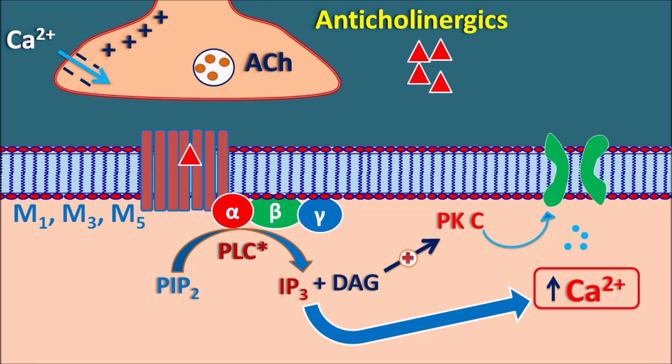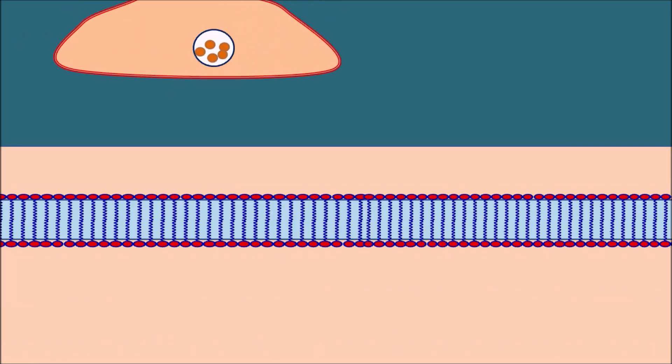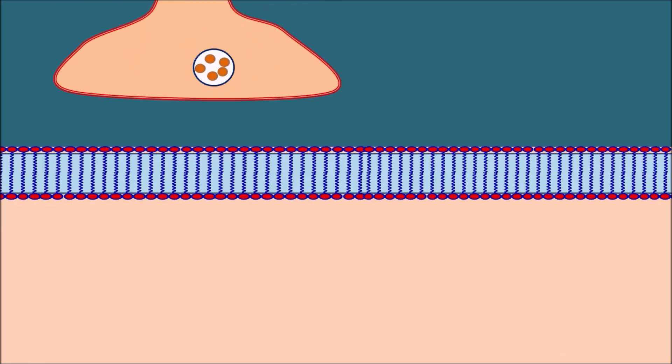The anticholinergics act as antagonists at the muscarinic receptors — they block the muscarinic receptors, thereby inhibiting the action of acetylcholine. In this way, anticholinergics can block the M1, M3, or M5 receptors. Now let us see the action of anticholinergics on the other types of muscarinic receptors.